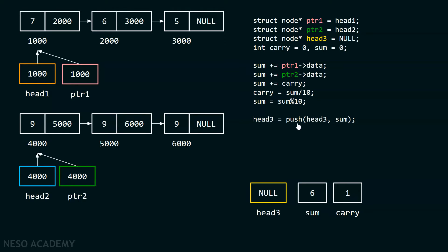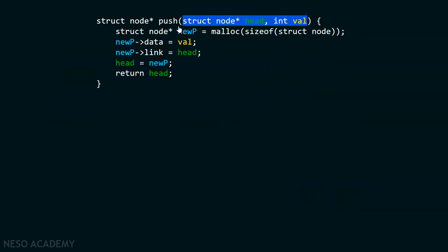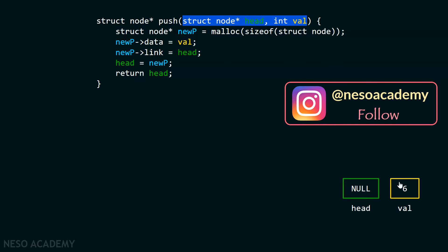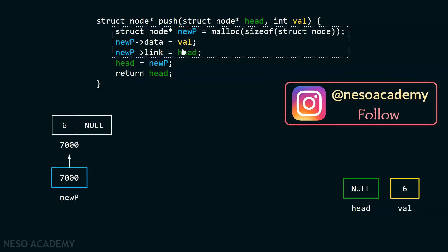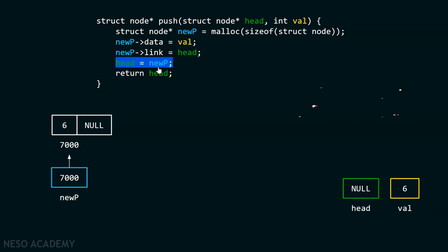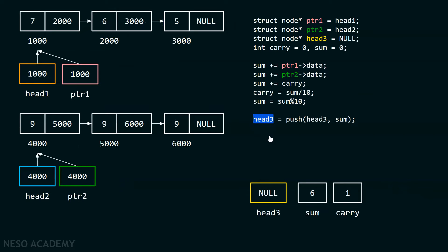To the push function, I am passing head3 and sum — that is null and 6 currently. This is how the push function looks: the head pointer receives null and val receives 6. These three lines of code create a new node, and new_p pointer is pointing to that new node. Then new_p->link = head stores null in the link part. After this, head = new_p updates head to address 7000, so it is now pointing to this particular node. We return head back, and head3 receives the address 7000 — we have received the address of the first node of the resultant linked list.